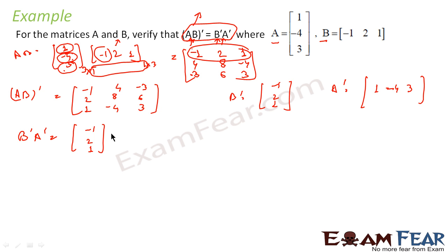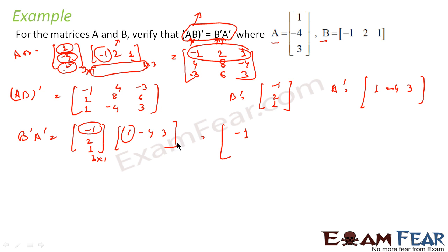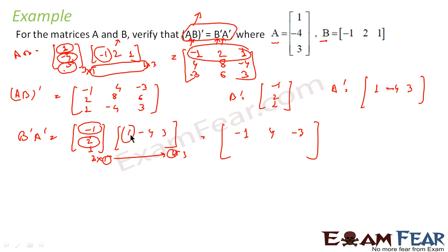RHS is nothing but B' × A', that is [-1, 2, 1] into [1, -4, 3]. We check feasibility: 1×3 horizontal into 1 vertical gives 3×1; 1 horizontal, 3 vertical — 1 and 1 matches, yes you can multiply, and the result will be 3×3. The first element is -1 × 1 = -1. Second element: -1 × (-4) = 4. Third: -1 × 3 = -3. Second row, first column: 2 × 1 = 2. Second element: 2 × (-4) = -8.